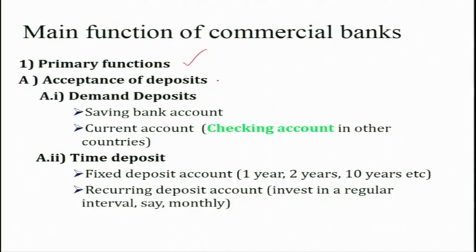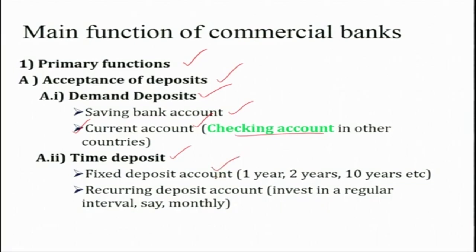The primary functions of commercial banks are the acceptance of deposits. There are two broad categories of deposits — one is called demand deposits or demand liabilities, and the other is time deposits or time liabilities. Coming to demand deposits, there is the savings bank account and the current account. In other countries it is called a checking account, where the account holder is allowed to write a check. In India, the savings bank account holder also, if they maintain a minimum amount in the bank, is given a checkbook and allowed to issue checks.